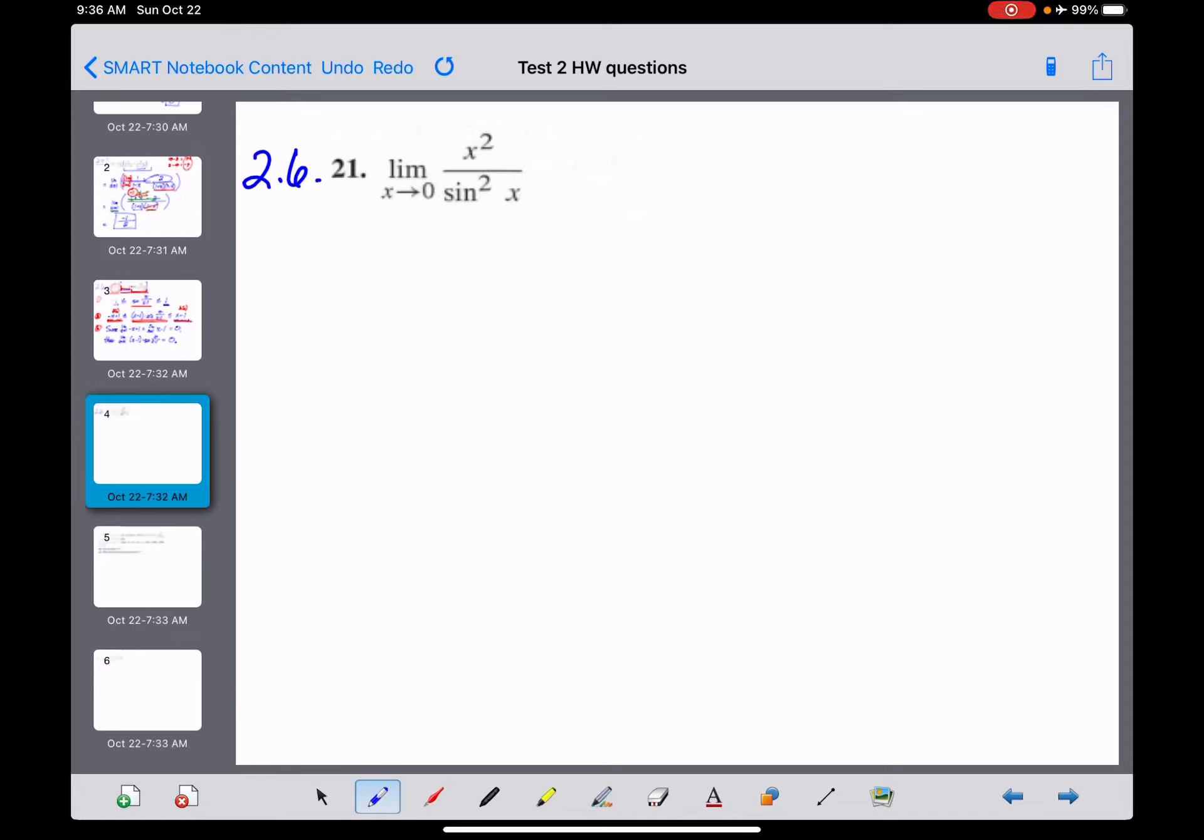Number 21 in 2.6 is a problem that doesn't require the squeeze theorem. It's just in the normal section where the directions say find that limit. And it really requires two tricks in order to do this.